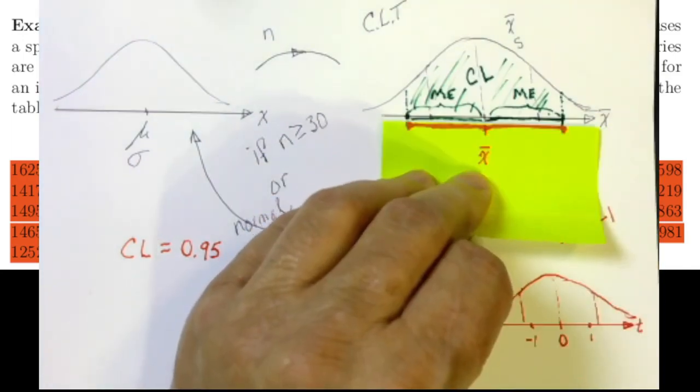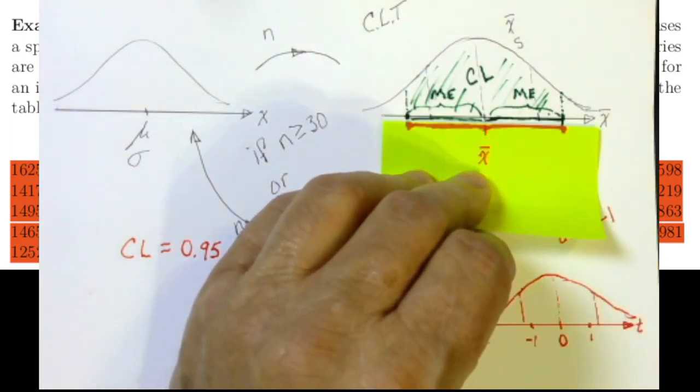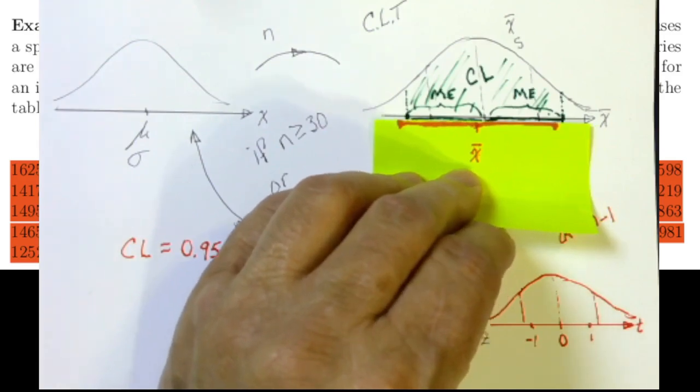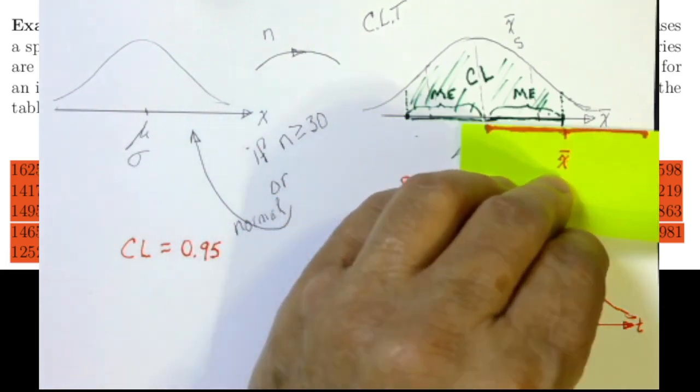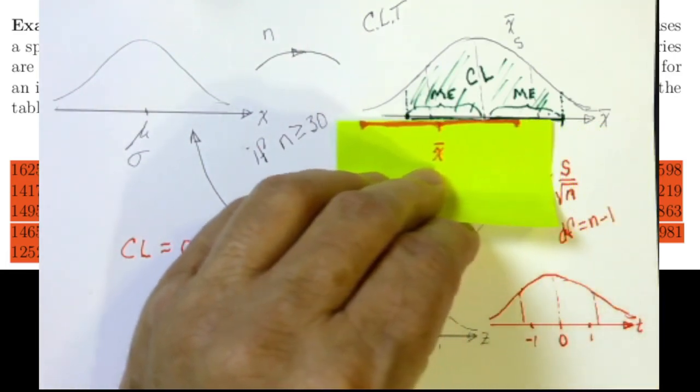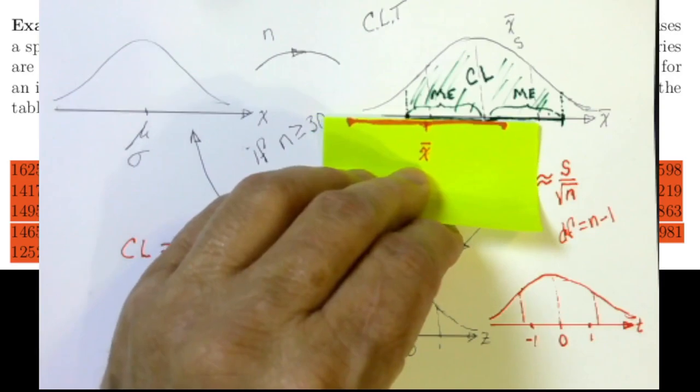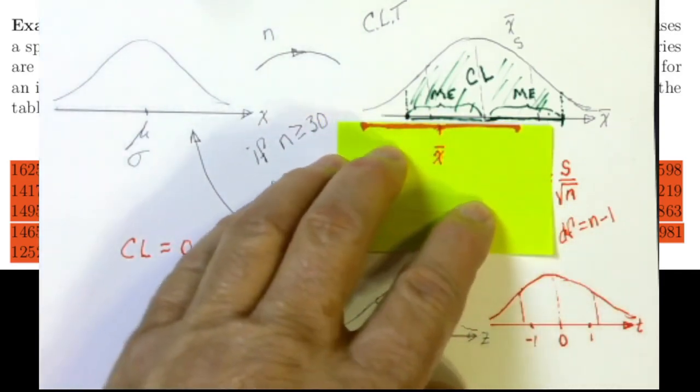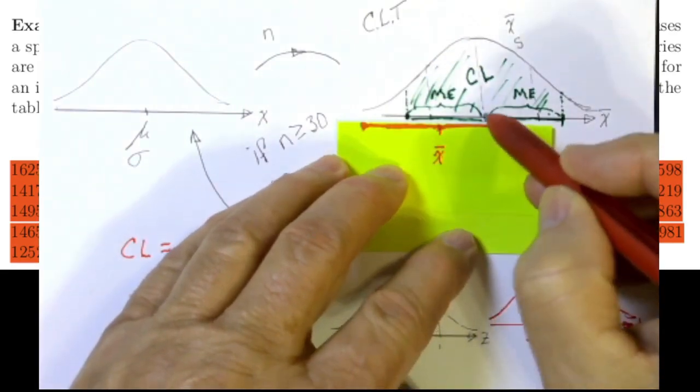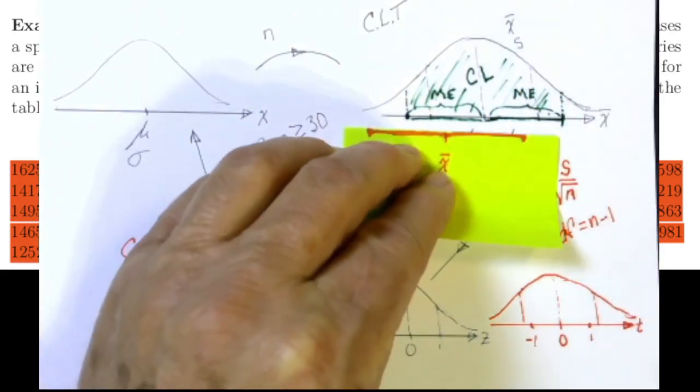But if we created a margin of error interval about X-bar, and we've got a 95% chance that that X-bar ends up between here and here, then notice that every time it does, this orange interval captures the real population mean.